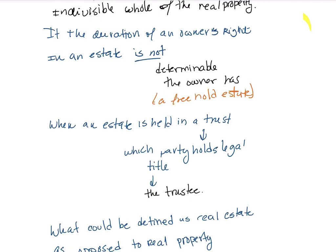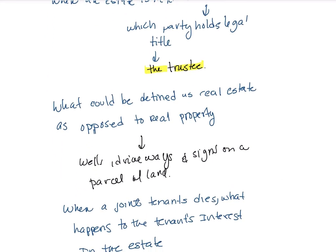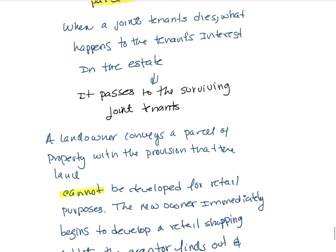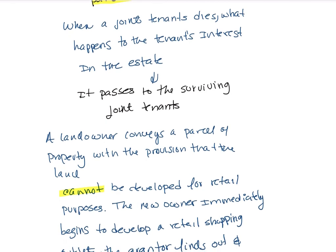When an estate is held in a land trust, the trustee holds the real title to the property. When a joint tenant dies, the deceased tenant's interest passes to the surviving joint tenants by right of survivorship.